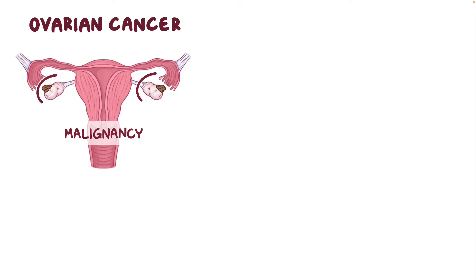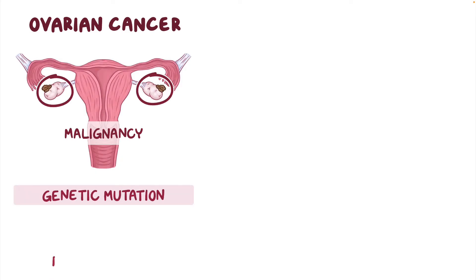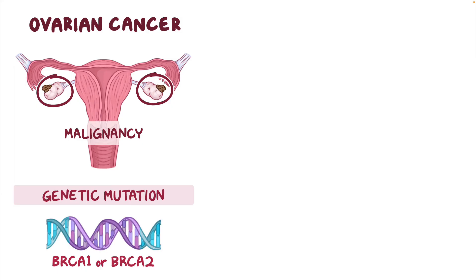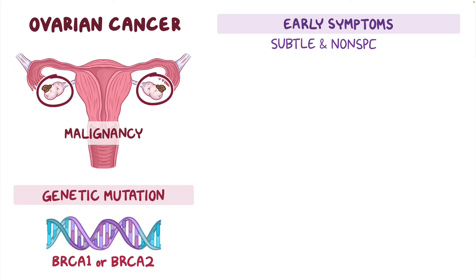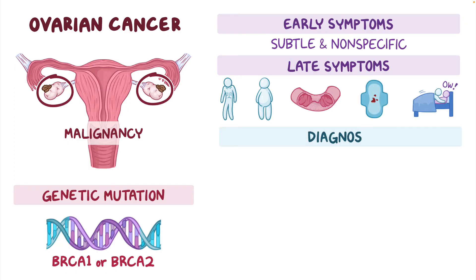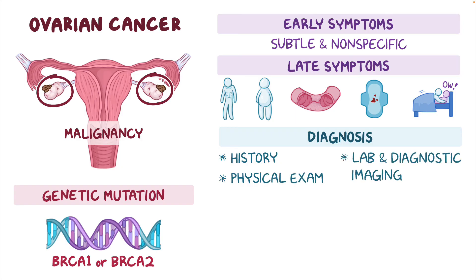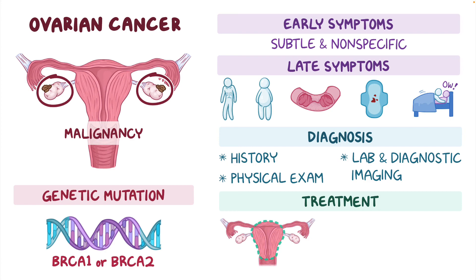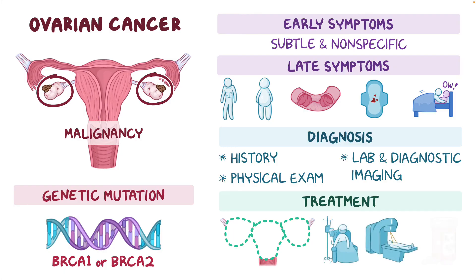As a quick recap, ovarian cancer is a malignancy of the ovaries typically caused by a genetic mutation in the BRCA1 or BRCA2 genes. Early symptoms are usually subtle and nonspecific, with late-stage symptoms including unintentional weight loss, abdominal enlargement, bowel obstruction, menstrual changes, and dyspareunia. Diagnosis involves a history, physical examination, and laboratory and diagnostic imaging tests. Treatment may include a combination of total abdominal hysterectomy with bilateral salpingo-oophorectomy, chemotherapy, radiation therapy, and PARP inhibitors.